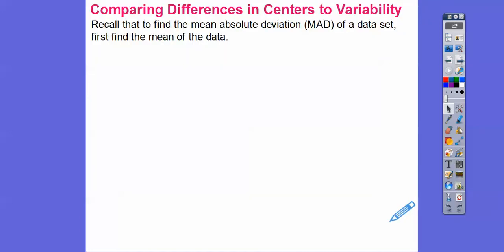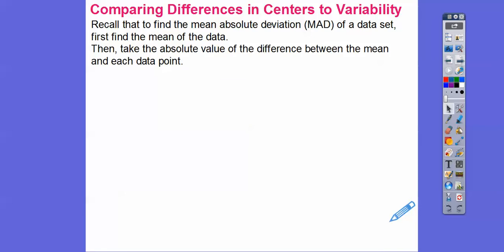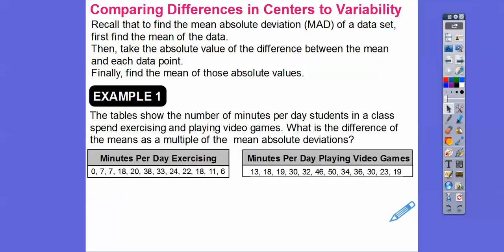So recall: to find the mean absolute deviation, the MAD, of a data set, we first find the mean of the data and then we take the absolute values of the difference from the mean of each data point — every number minus the mean, taking the absolute value. Then we find the mean of those absolute deviations by adding them up and dividing by the number of numbers. We're going to do that with both data sets and then compare their MADs.